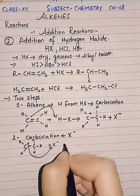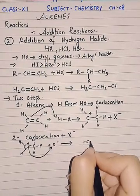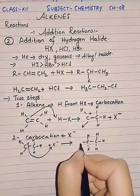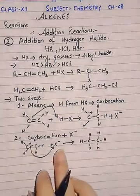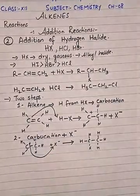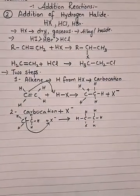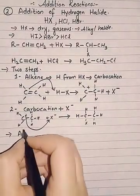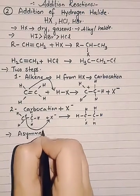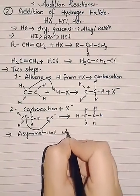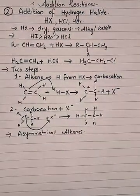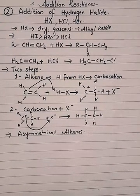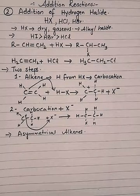The positively charged carbon attacks the halide ion, and as a result we obtain an alkyl halide. This is the case when the alkenes are symmetrical. Now, what happens in the case of asymmetrical alkenes?